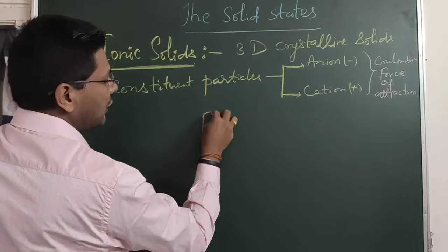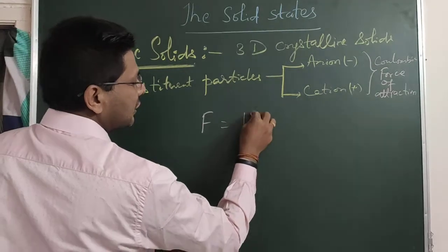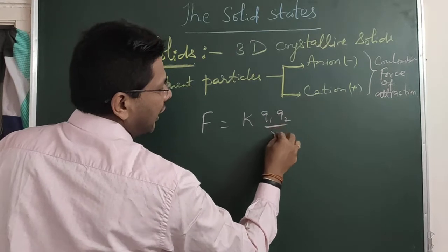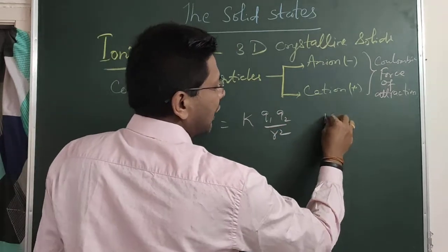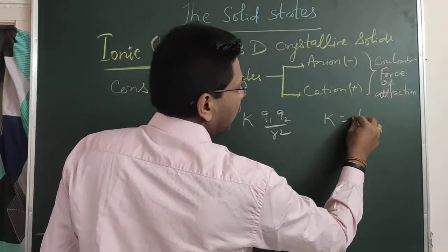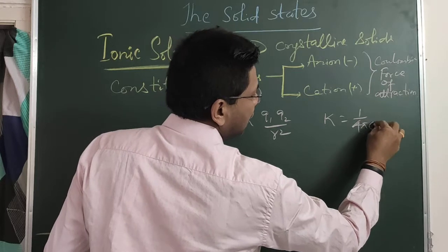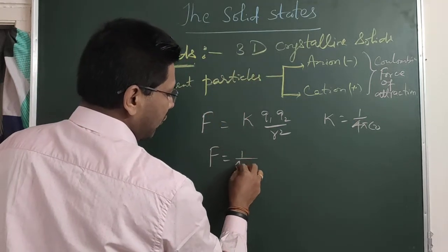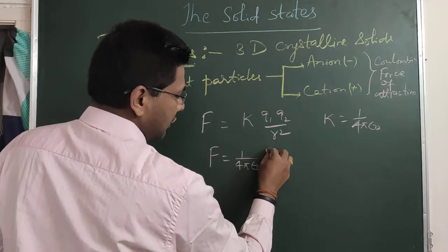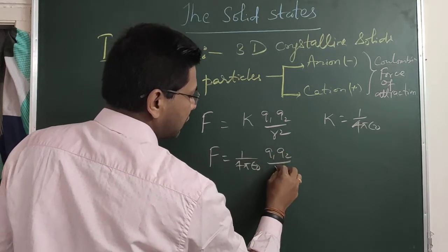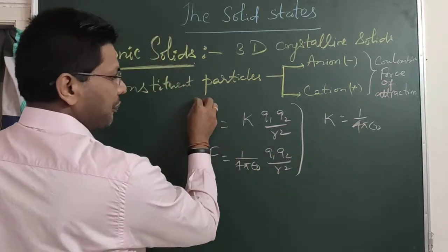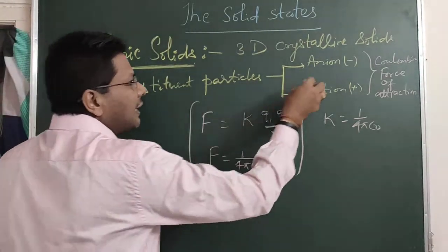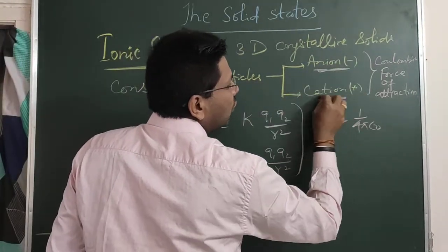You must have read what Coulomb's law is. Coulomb's law is: F = k·q1·q2 / r², where the value of k is 1/(4πε₀). So we can write F = (1/4πε₀)·q1·q2 / r². This is Coulomb's law, and cations and anions are attracted by this law.